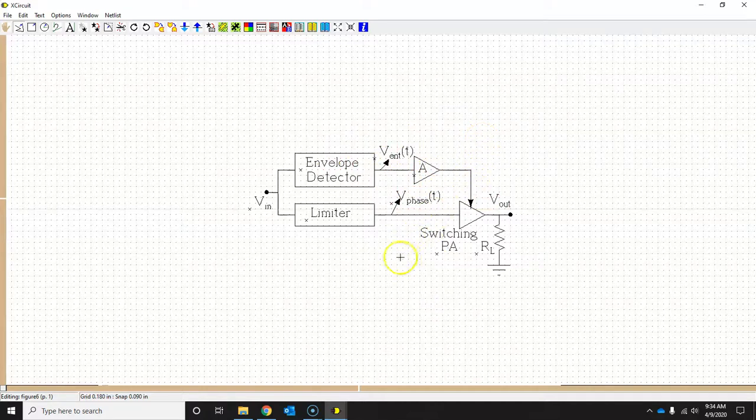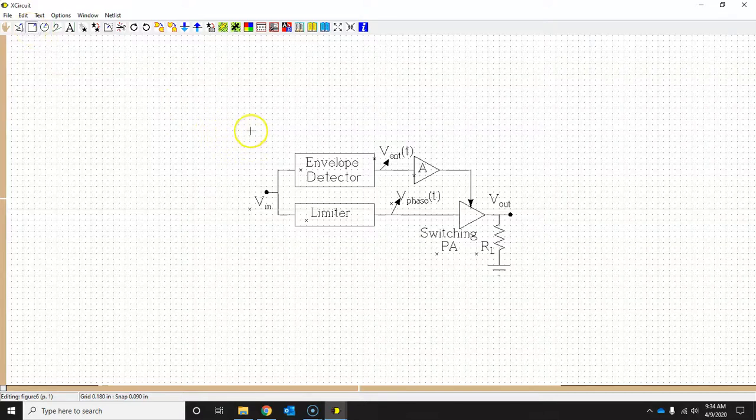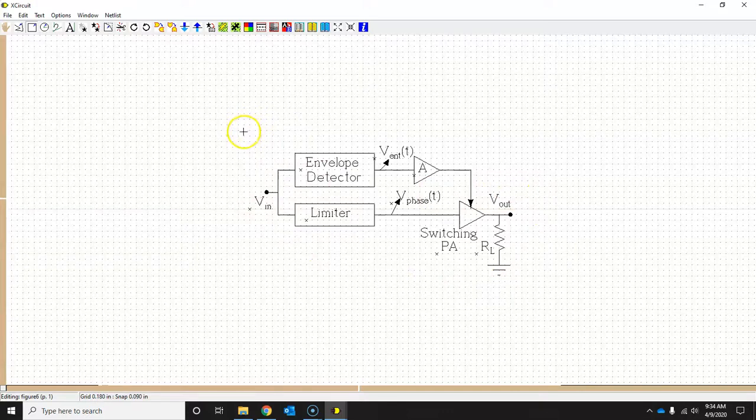So this happens sometimes when your circuit, your schematic is bigger, larger, and in that case, you would like to draw some kind of boundary. So to draw a boundary, what you do is you click on this box here, and just draw a boundary around this schematic.